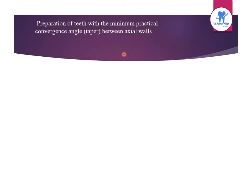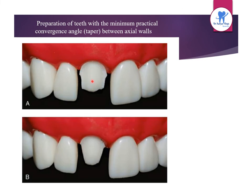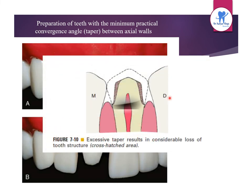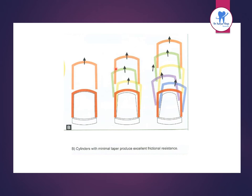Regarding minimum practical convergence angle or taper between axial walls: teeth prepared with more taper are not conservative. Excessive taper results in considerable loss of tooth structure, shown by the cross-hatched area. Cylinders with minimal taper produce excellent frictional resistance. The prepared tooth must be conservative — small taper is preferred over excessive taper.